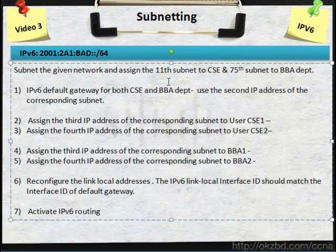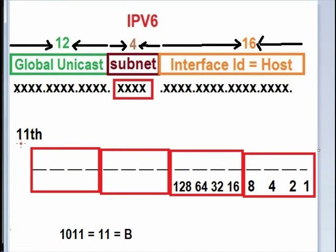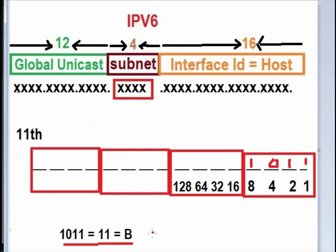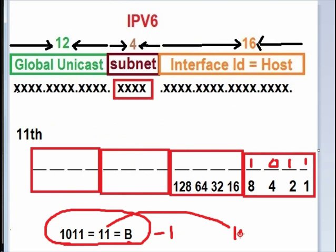Back to the question. We are asked for the 11th number subnet and the 75th number subnet. Let's do the 11th first. For subnetting we have 16 bits. For 11th, we need 8 plus 2 plus 1 equals 11, so binary 1011. But remember, for IPv6 zero is also counted, so what we are counting minus 1 is the answer. So the 11th subnet corresponds to 10 in decimal, and hexadecimal form of 10 is A. So the 11th number subnet is A.